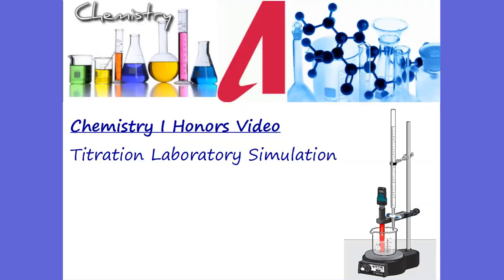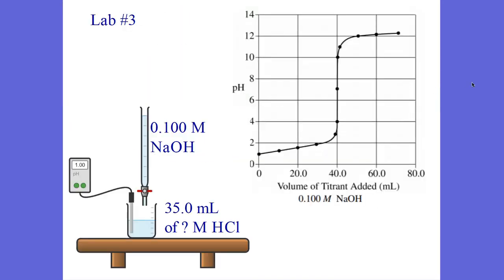Let's go to lab number three. Lab number three is, we're not doing an end point lab. We're doing an equivalence point lab. You can see right here, I start off with a pH of one of my acid. I have 35 milliliters of, I don't know what my acid is. That's what I'm trying to find.